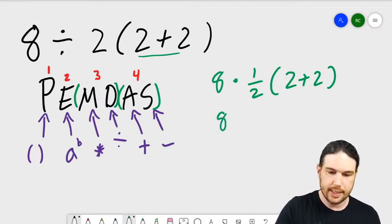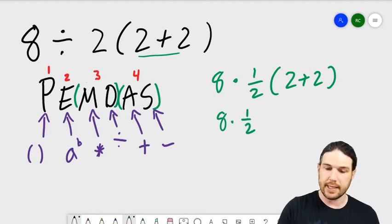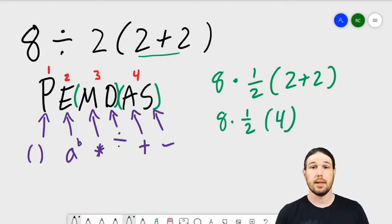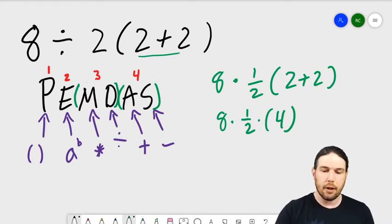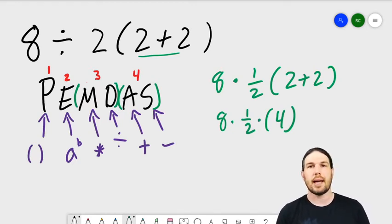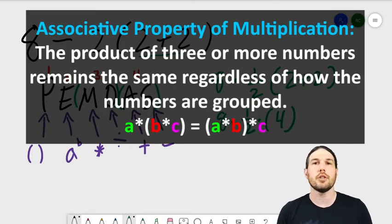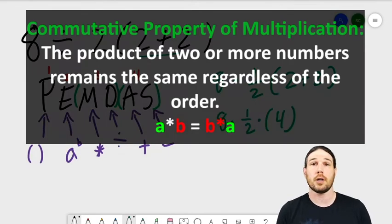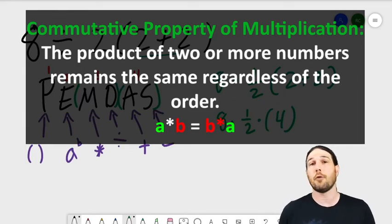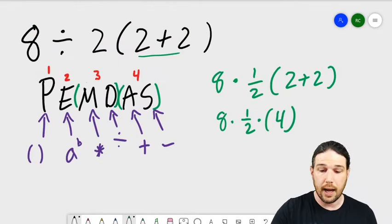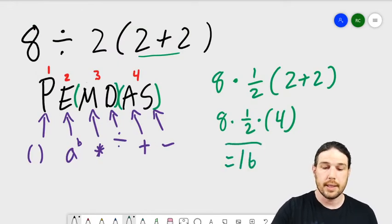This becomes 8 times 1 half. Inside the parentheses is still 4, right? And now we can tell that we've got three things that are multiplied together. Multiplication is associative and commutative, definitions above, so we can do them in whatever order we want. 8 times 1 half is 4, times 4 is 16. Or we could do it the other way, 4 times 1 half is 2, times 8 is 16. Either way, the answer is 16.